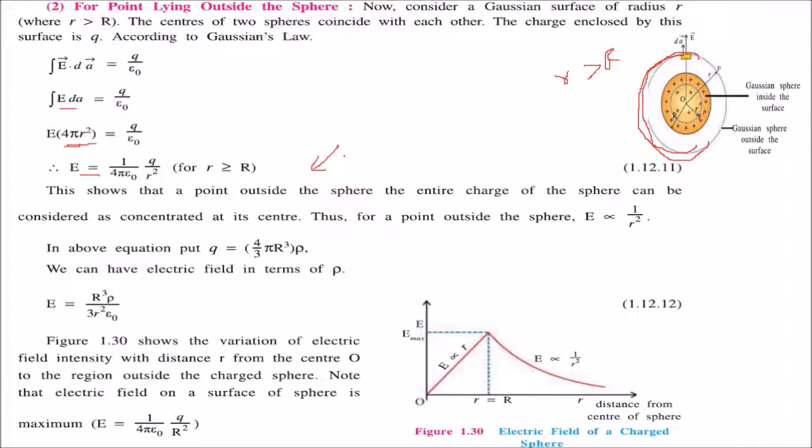This shows that for a point outside the sphere, the entire charge can be considered at the center, and E varies as 1/r². If we substitute q = 4/3 π R³ ρ, the equation becomes E = ρR³/(3ε₀r²).